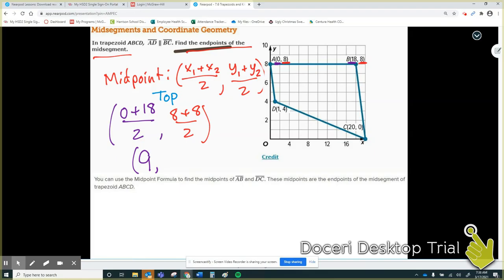For my y values, 8 plus 8 is 16. 16 divided by 2 is 8. So 9 comma 8, that point right there is where my mid-segment will start on the top.